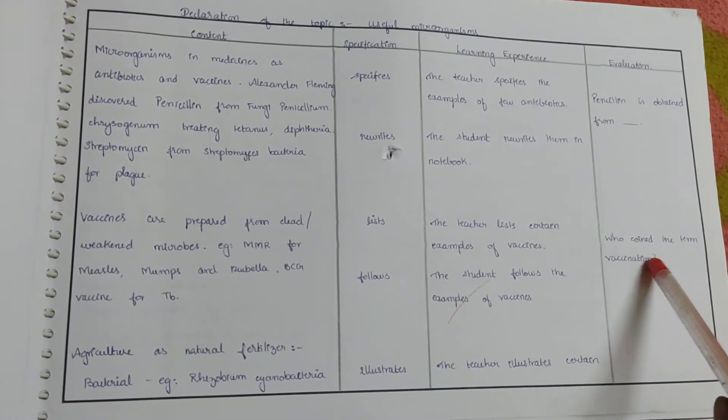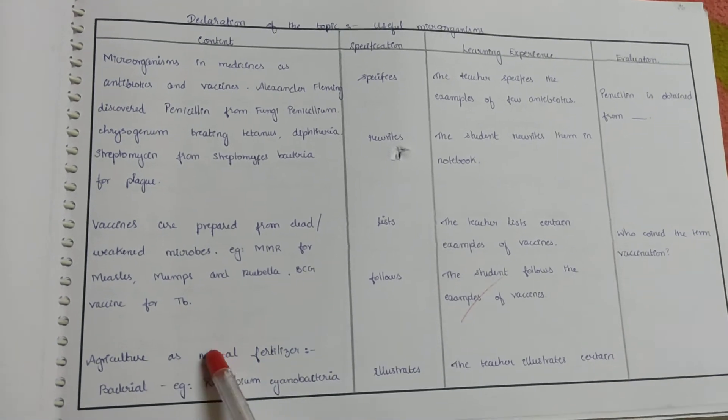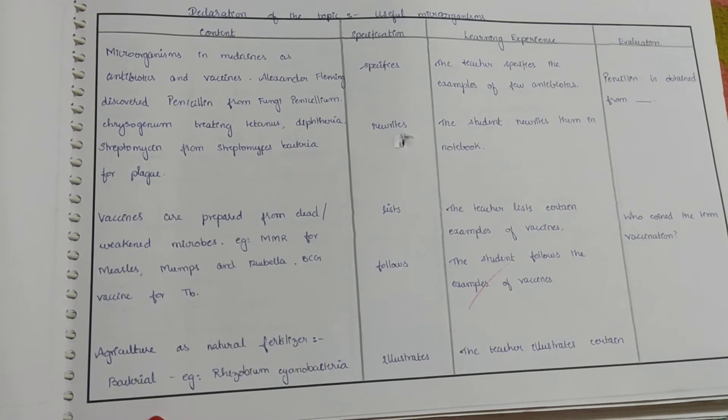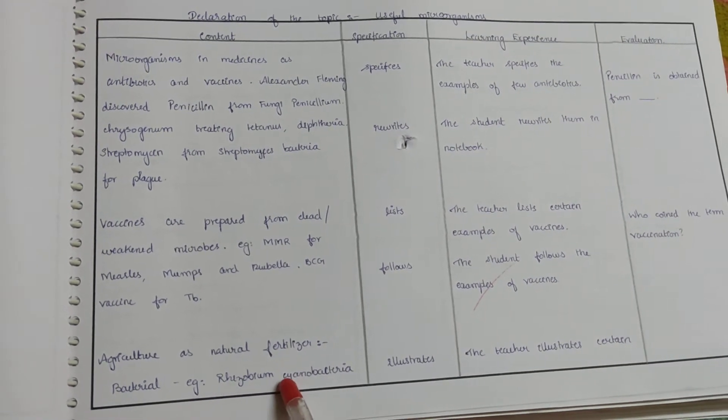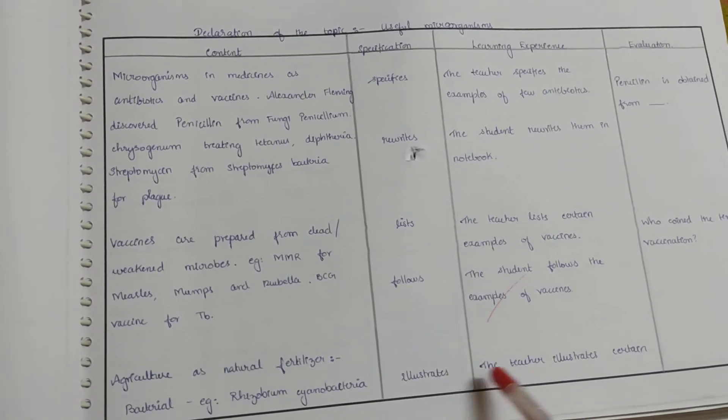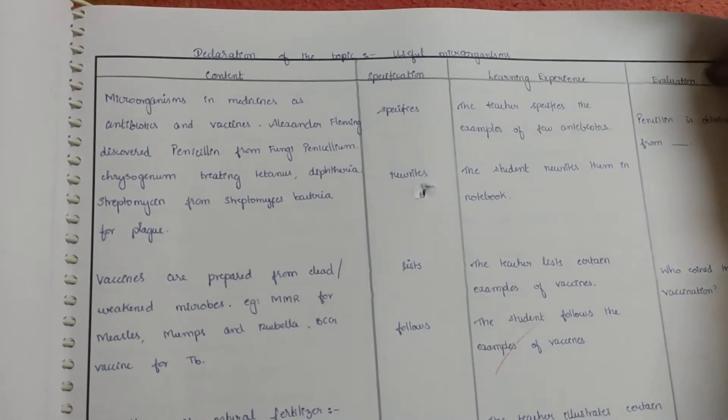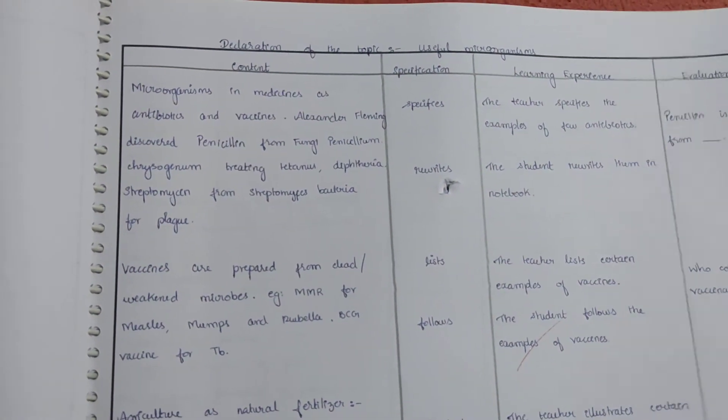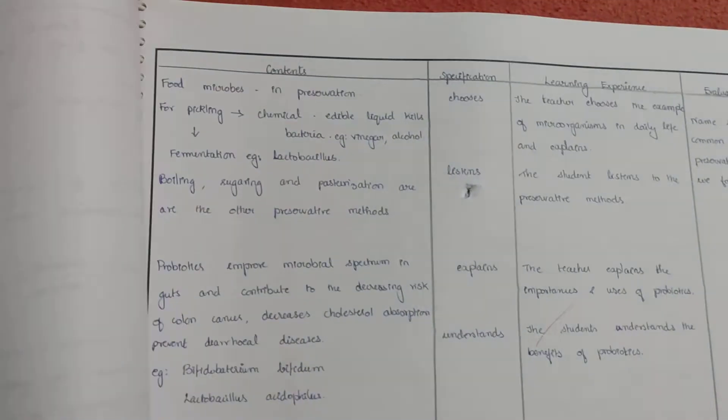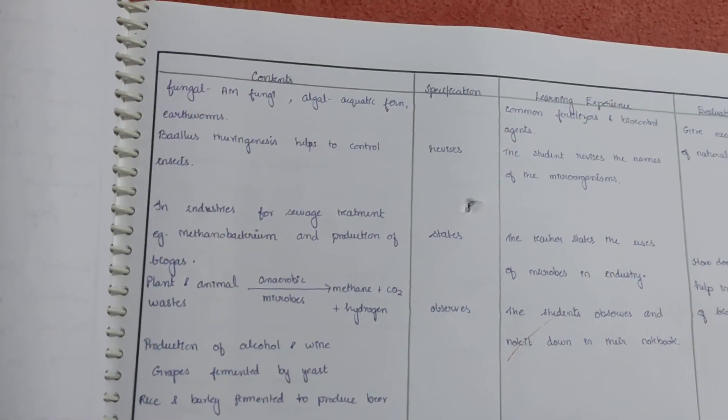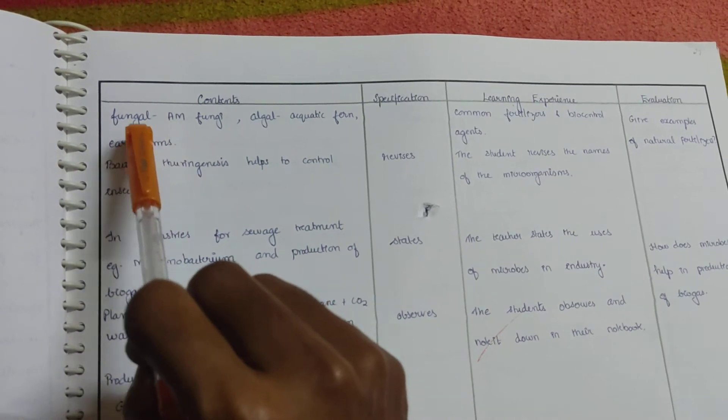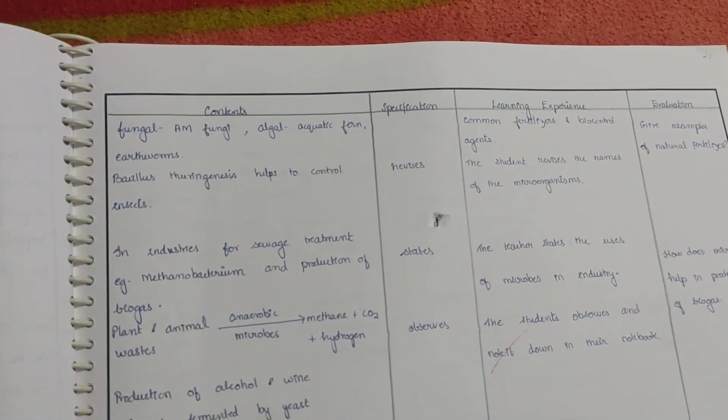Next content: agriculture as natural fertilizer. Bacterial example, we are giving Rhizobium, cyanobacteria. Here the teacher is illustrating certain examples. We have already given bacterial example, so here we are giving the example for fungal AM fungi, algal aquatic fern, earthworms.